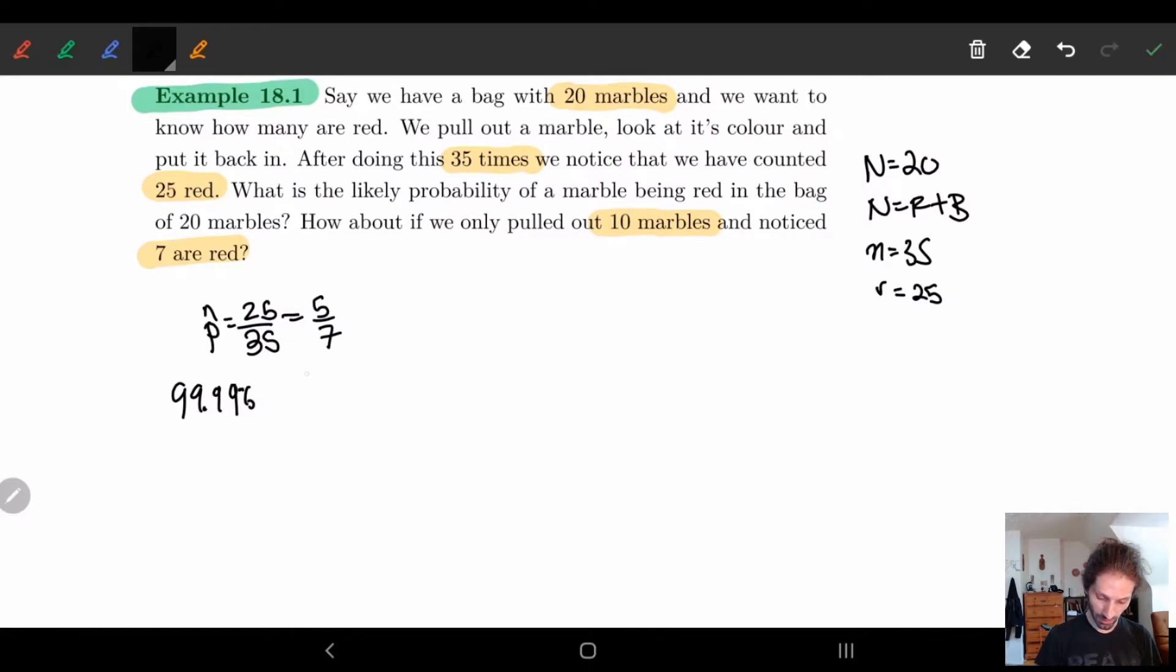Well, I just look at my interval. p is going to be in the interval p hat minus 2 over square root of n and p hat plus 2 over square root of n.